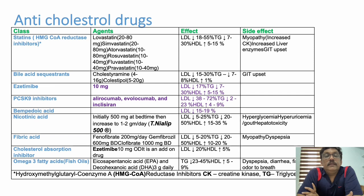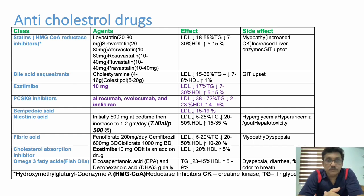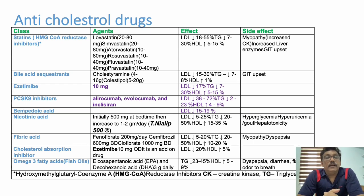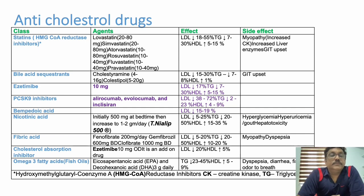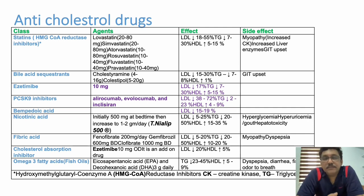A newer drug is the PCSK9 inhibitor evolocumab, which reduces LDL by 38–72% — a much higher percentage of reduction than other drug classes. It reduces triglycerides by 2–23% and increases HDL by 4–9%. Note that none of the drugs can significantly increase HDL cholesterol — the good cholesterol that protects the heart from atherosclerosis. To increase HDL, options include regular exercise, green leafy vegetables, and omega-3 fatty acids such as eicosapentaenoic acid (EPA) and docosahexaenoic acid (DHA), which are mainly derived from fish oil.